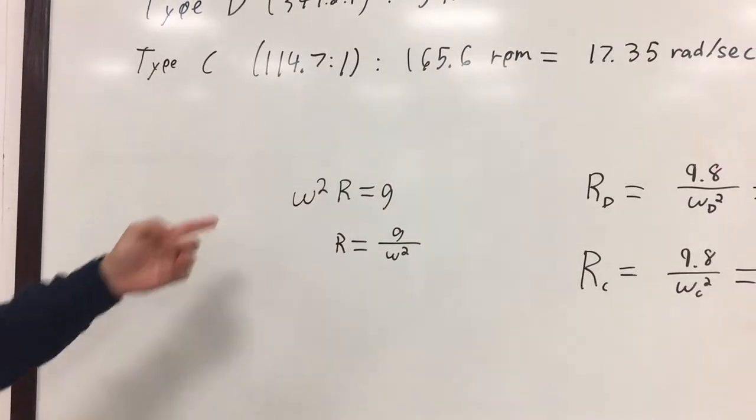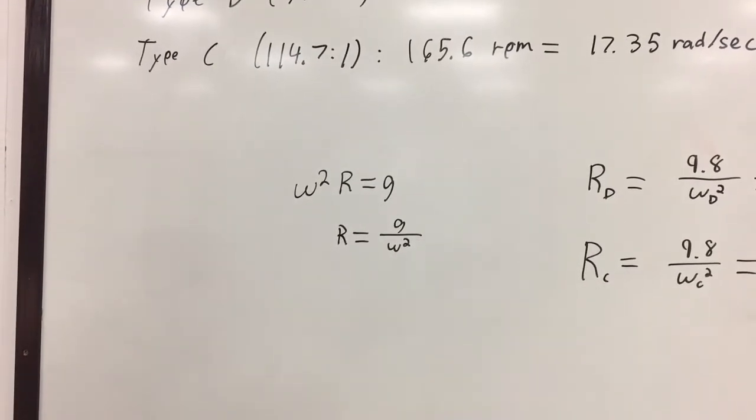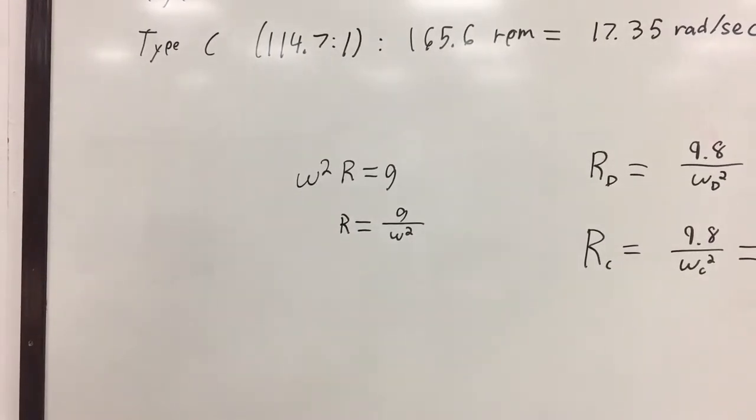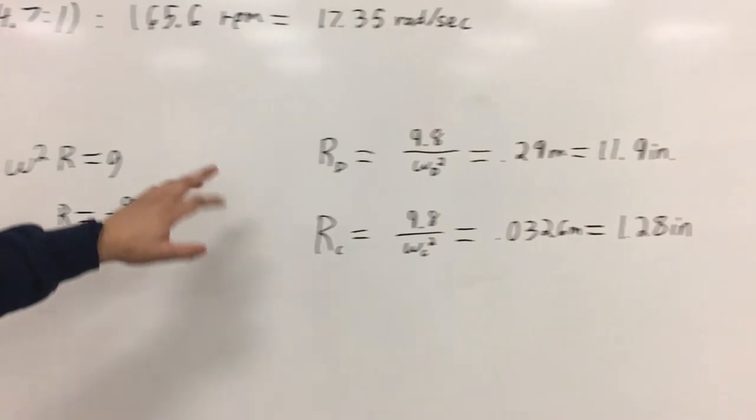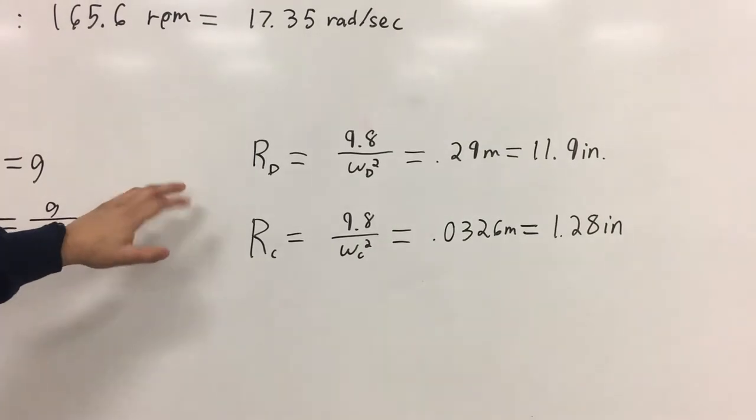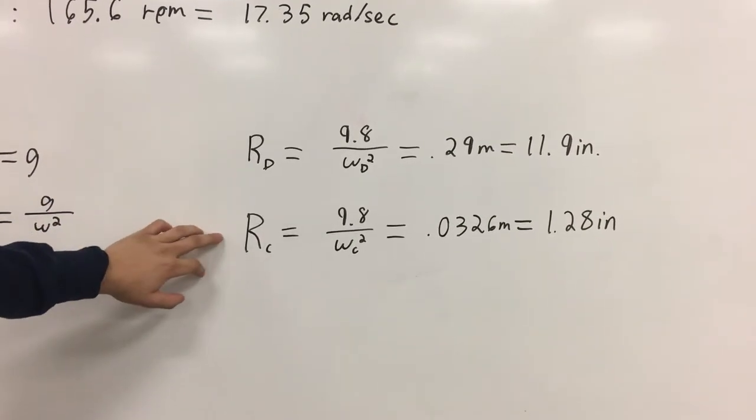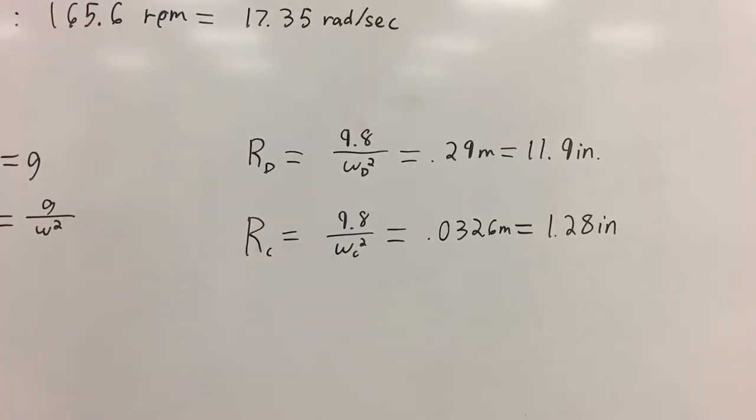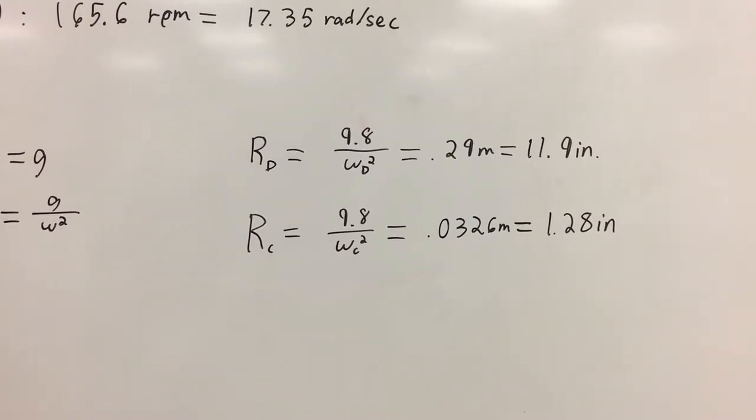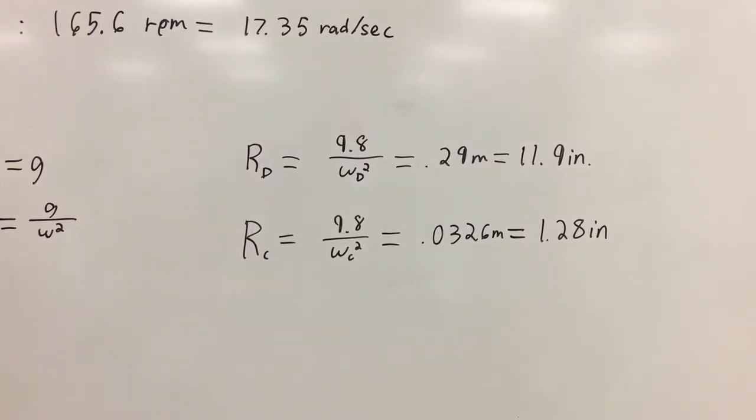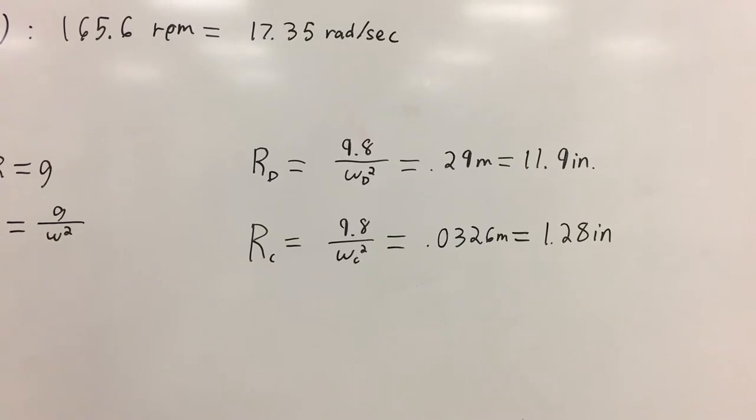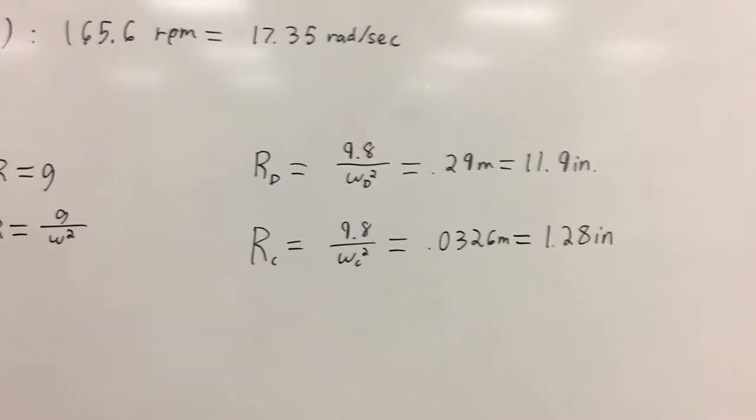From the previous analysis, we got that omega squared r was equal to G, G being the acceleration that we wanted as the maximum. So r would be equal to G over omega squared. Based on that, we got our two radii with reference to each of the two gear ratios. RC was a lot more reasonable because it was 1.28 inches versus almost a foot. We chose not to analyze the other two gear ratios because they were just going to give us radii smaller than RC, which would be a little too small and probably a little too fast for what we were looking for.